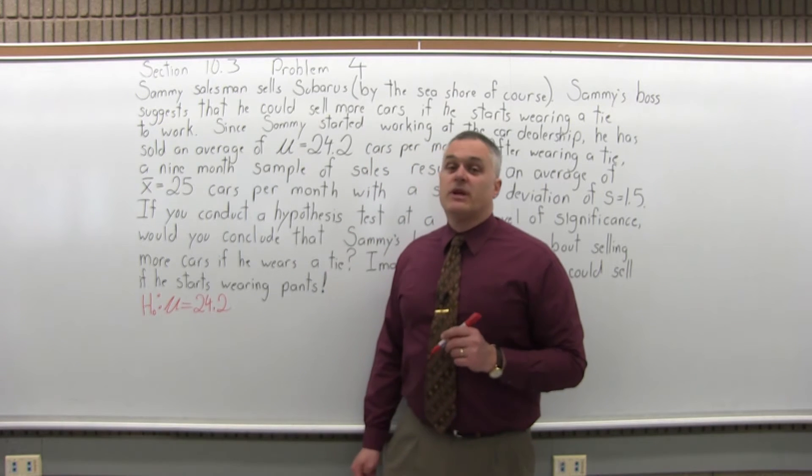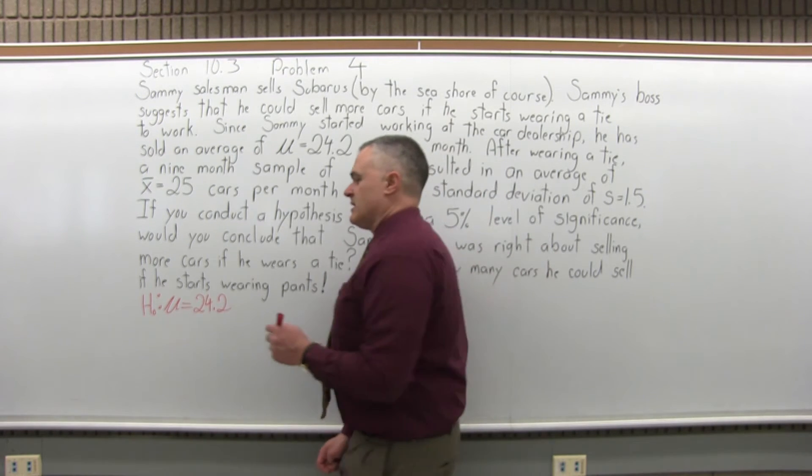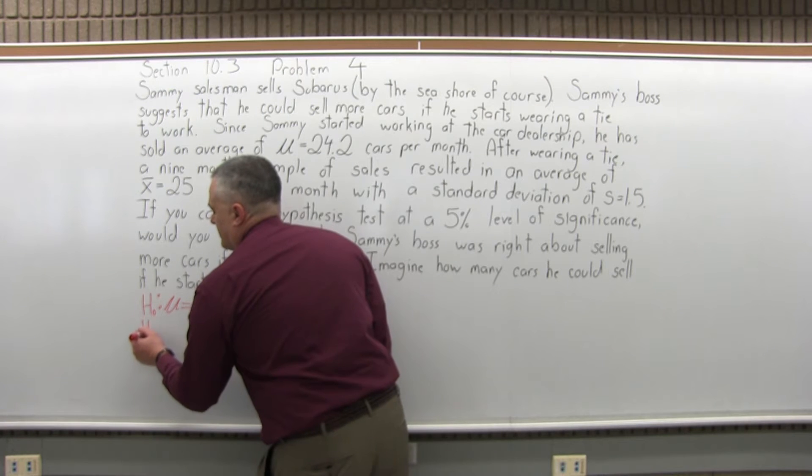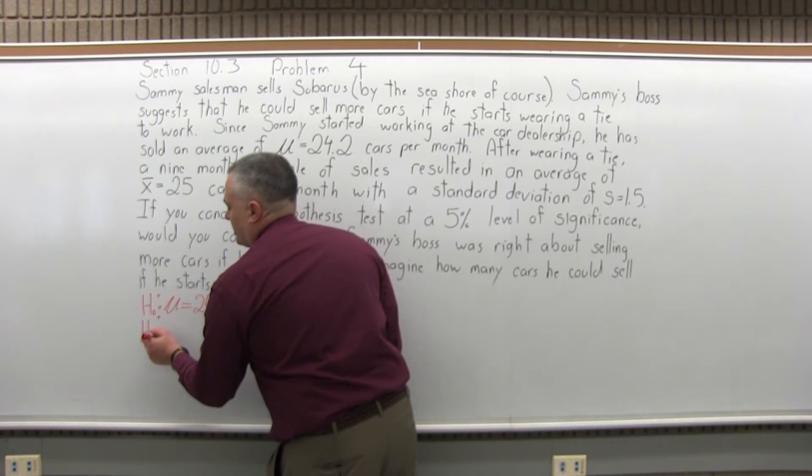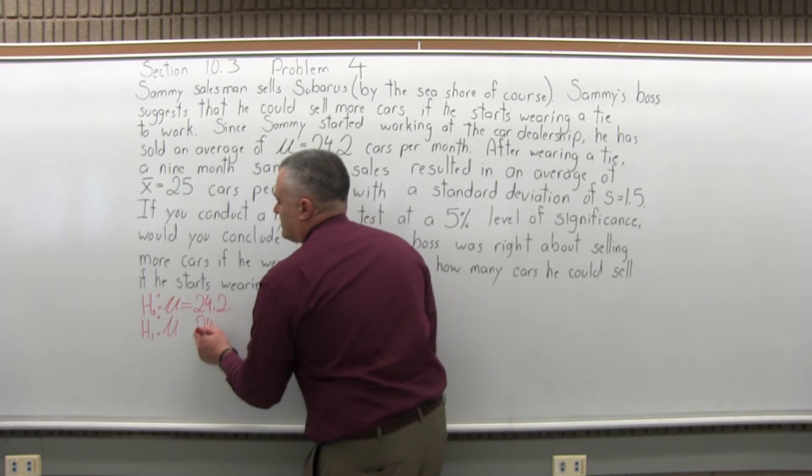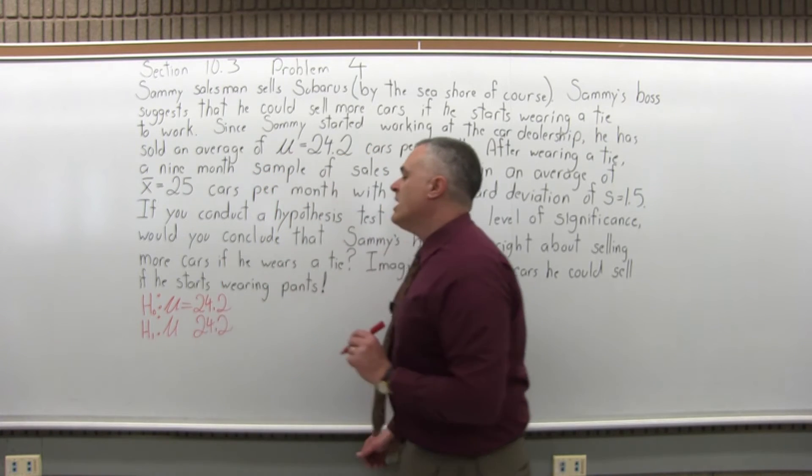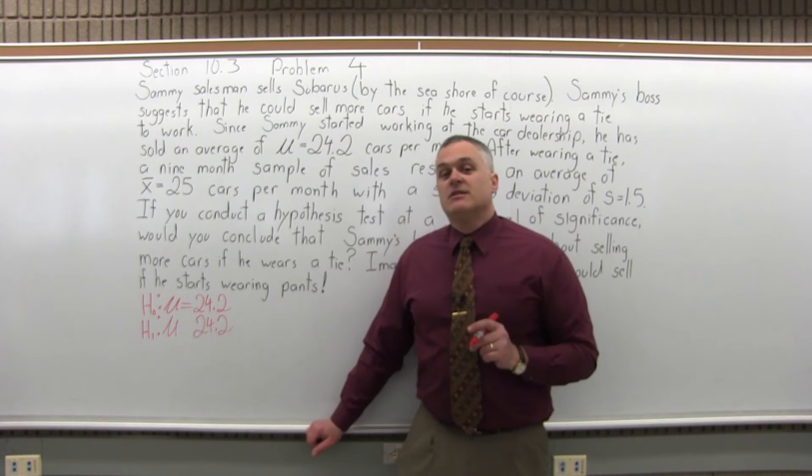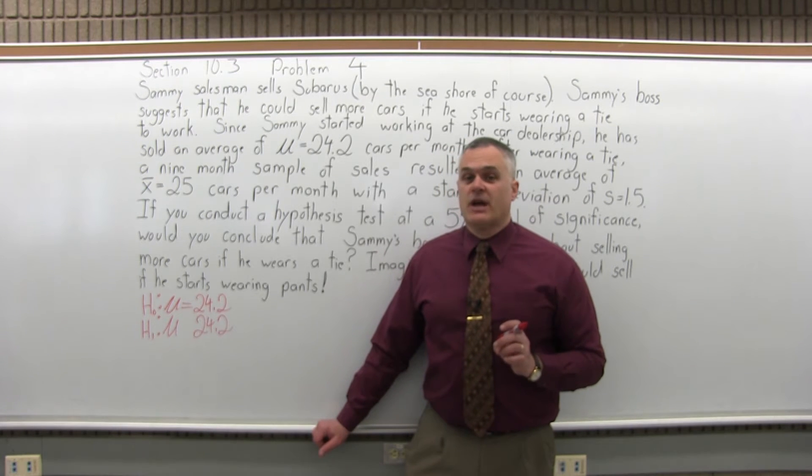Step two, we want to write the alternate hypothesis. So it's a capital H again, except this time with a subscript of one for alternate. You put the colon, the mu, the same number. So in this problem, 24.2, but a different symbol. This time it's going to either take less than, greater than, or not equal to.